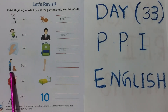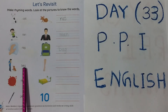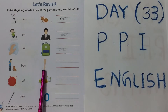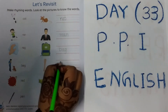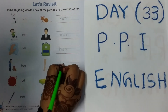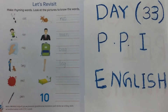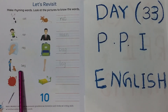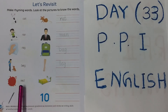Now see the next. B-E-G, Beg — it's an E-sound word. B-E-G Beg, L-E-G Leg. We have to write the spelling of Leg. L-E-G Leg. Beg, Leg.